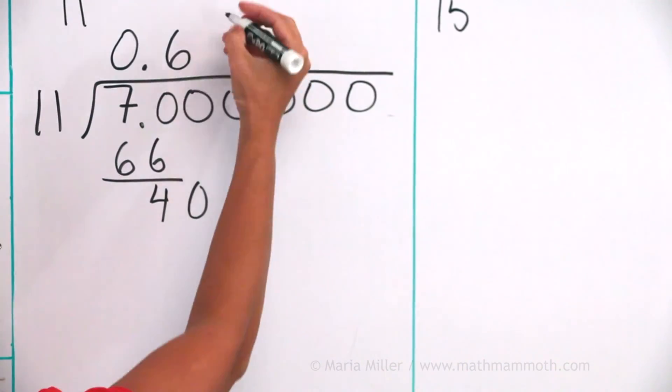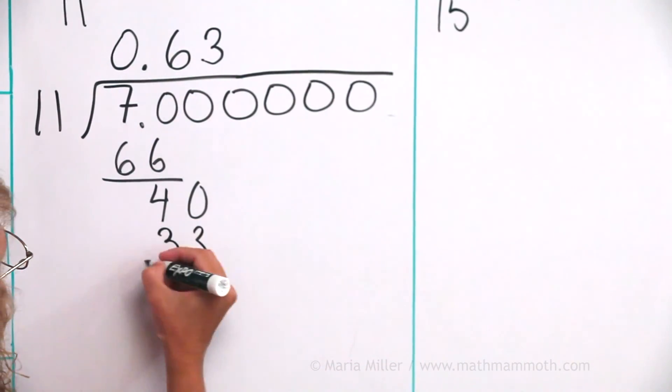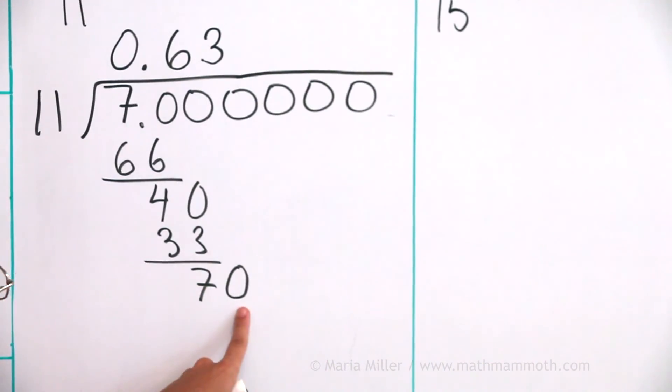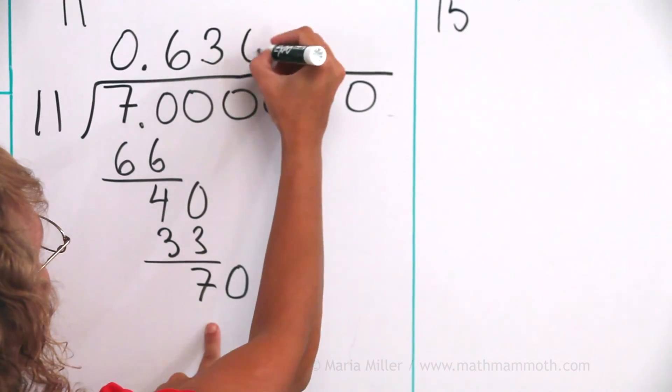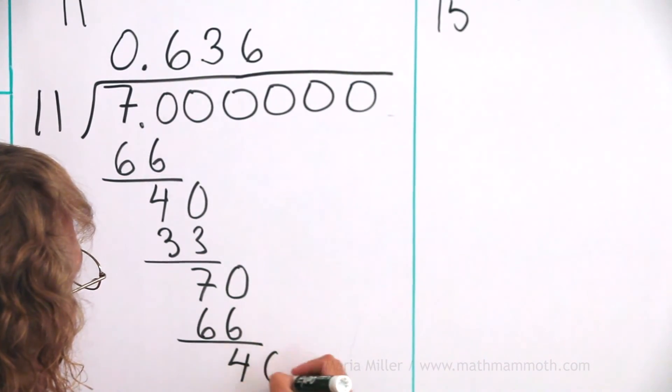Drop a zero. 11 goes into 40 three times. 3 times 11 is 33. Subtract, 7, and then another zero. 70, just like how I started. 11 goes into 70 six times, I get 66. And 4, drop a zero.